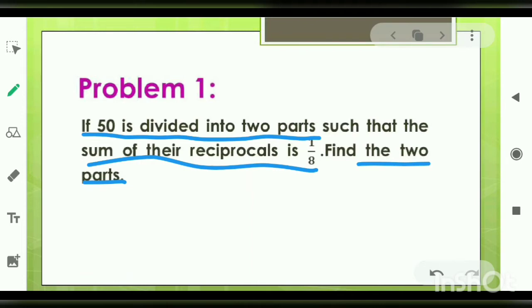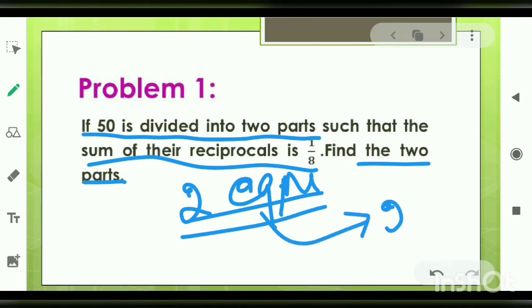Using these two information, you can form the two equations. From the two equations with two unknown variables, you can easily find two values which are nothing but the two parts. Hope you will solve this question.